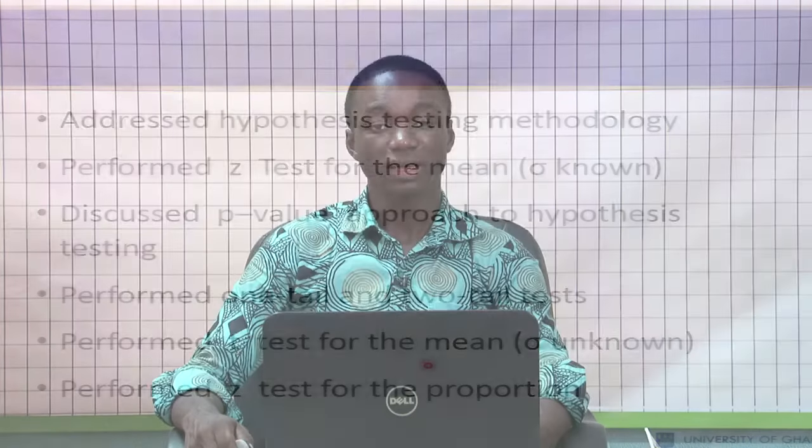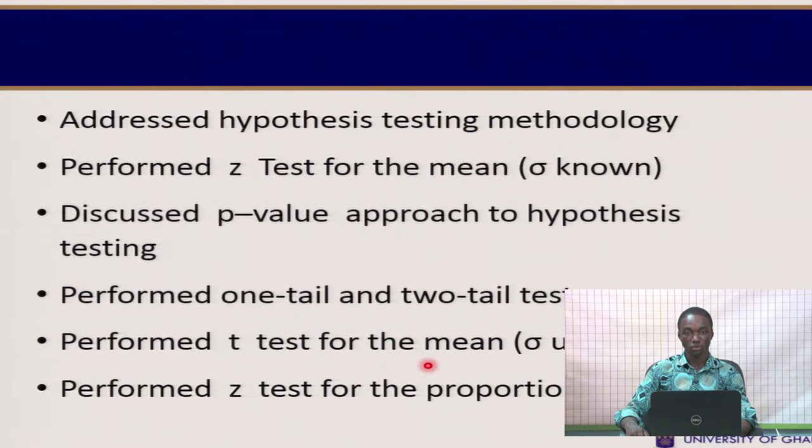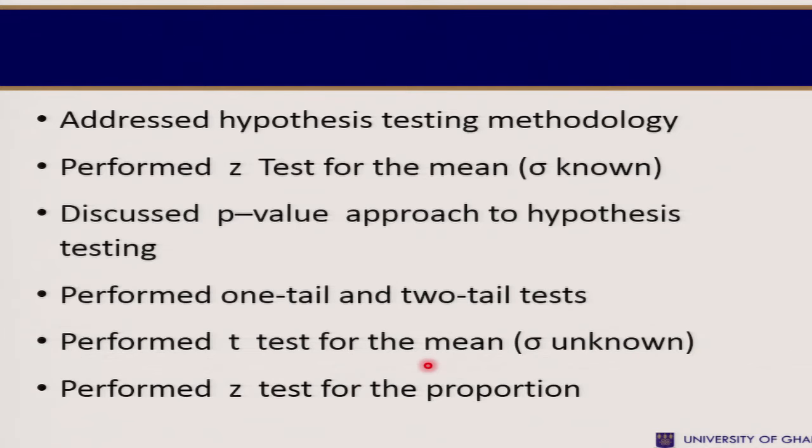In summary, in this session we addressed hypothesis testing. We performed a Z test for the mean where the population standard deviation was known, discussed the p-value approach to hypothesis testing, and performed one- and two-tailed tests. We performed the T test for the mean when σ is unknown, and the Z test for the proportion — all for a one-sample situation. In our next session, we shall treat hypothesis testing for means and proportions when there are two samples.